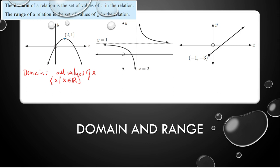The domain for this one — as you can see here, it is very near. This line is very important. Our x here is very near x equals 2, but it is not equal to 2. It doesn't touch x equals 2. So that means all x, but x should not be equal to 2.